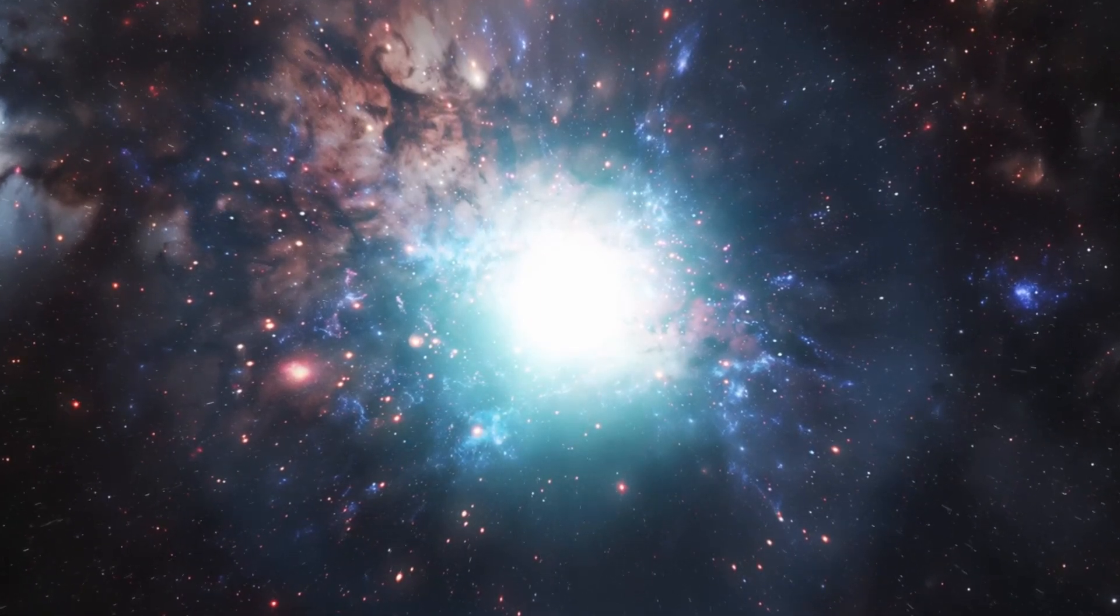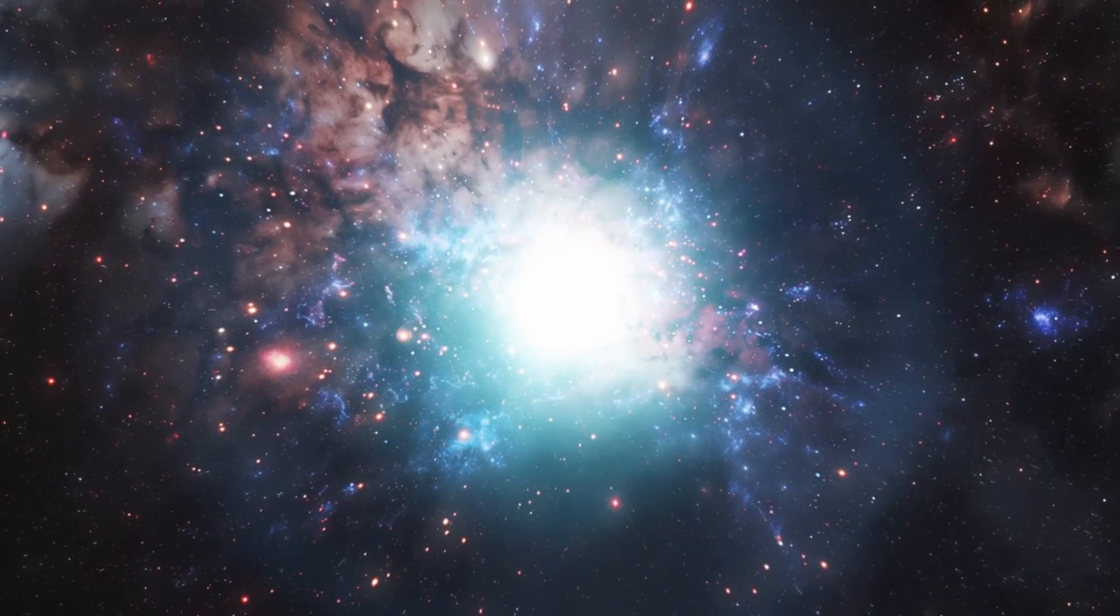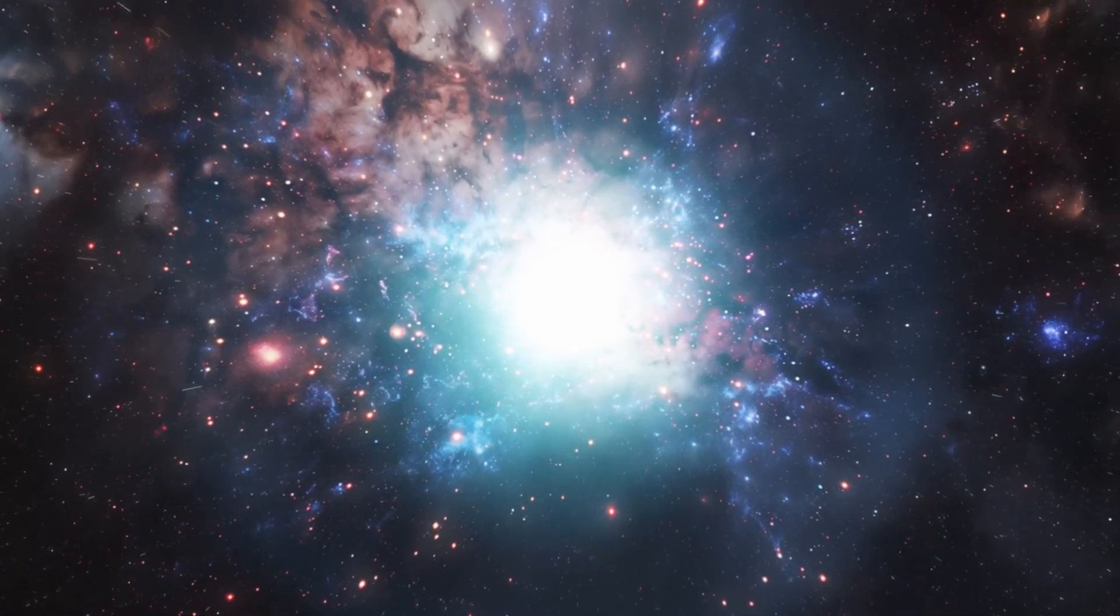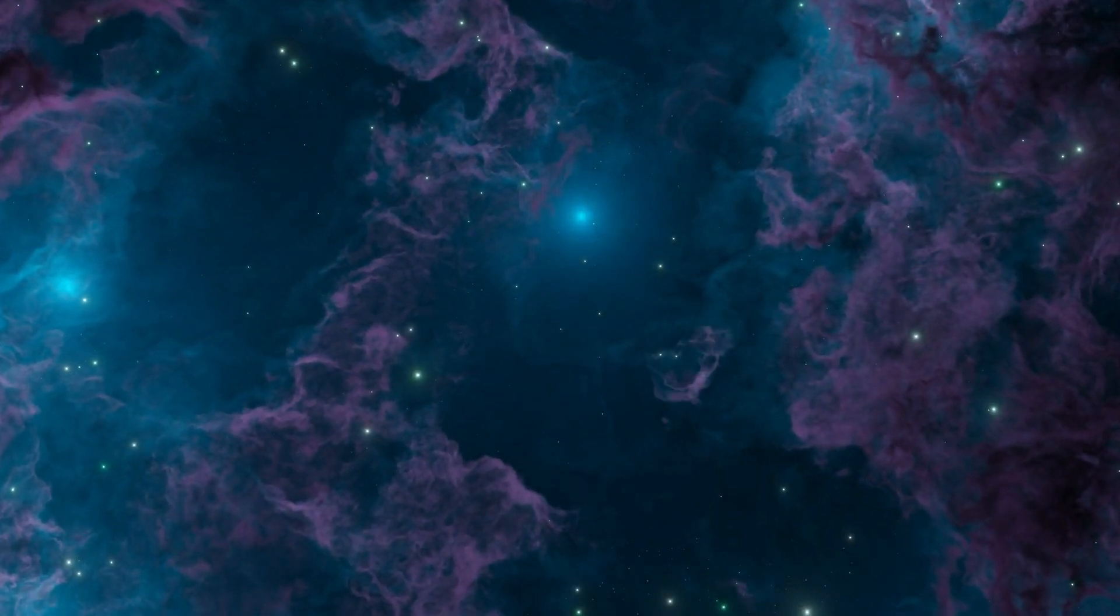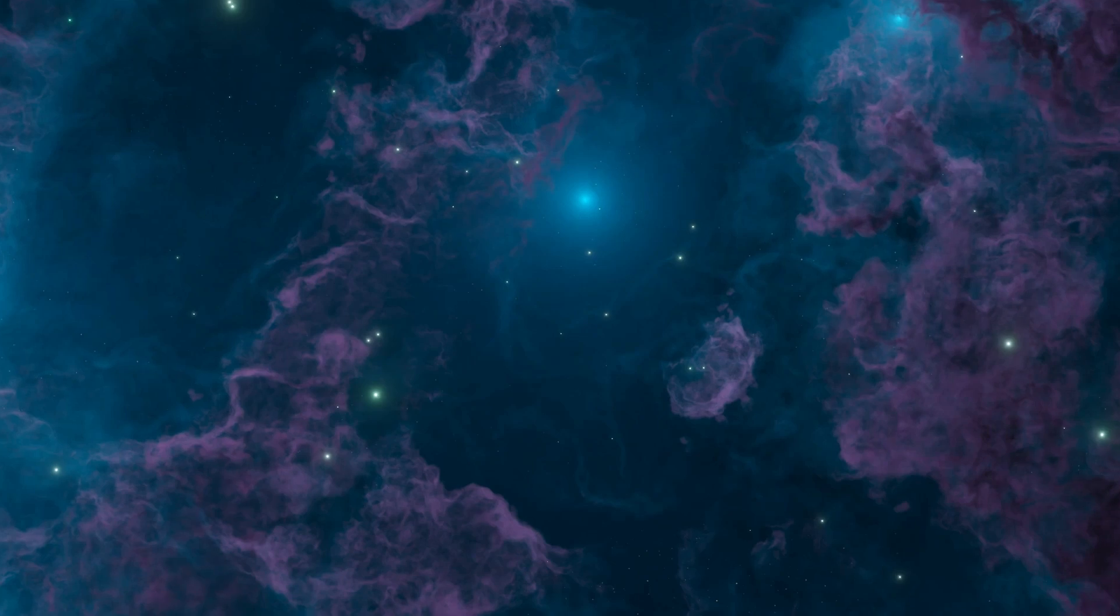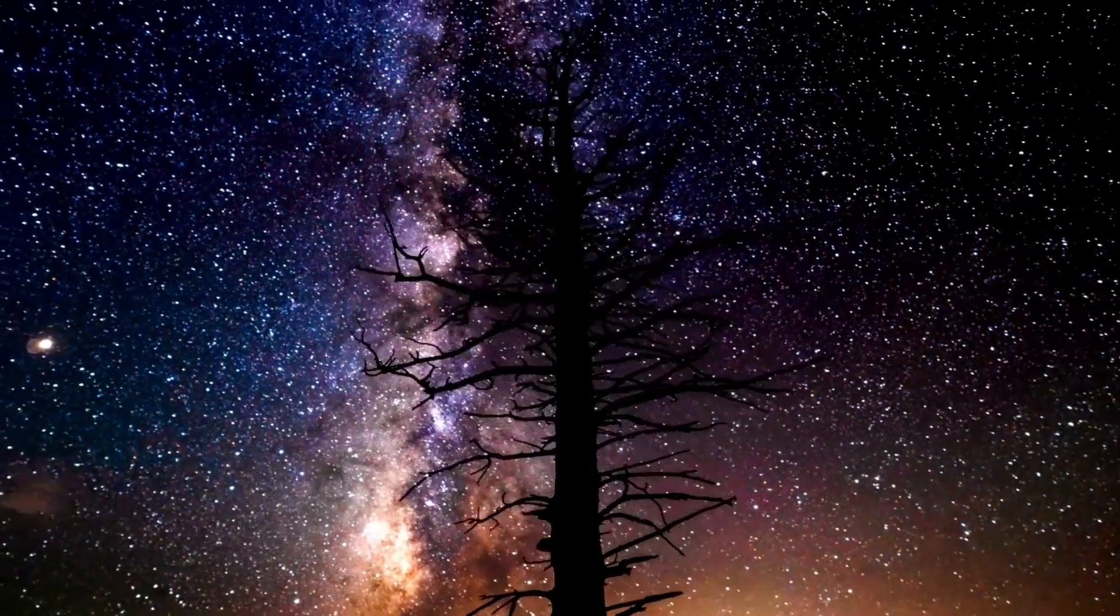Betelgeuse is a red giant star. If you put it where the sun is, it would extend out to the orbit of Jupiter. It's enormous and very unstable. It's about to explode. They are among the biggest explosions of radio energy in the entire universe, generating more energy than a billion suns.